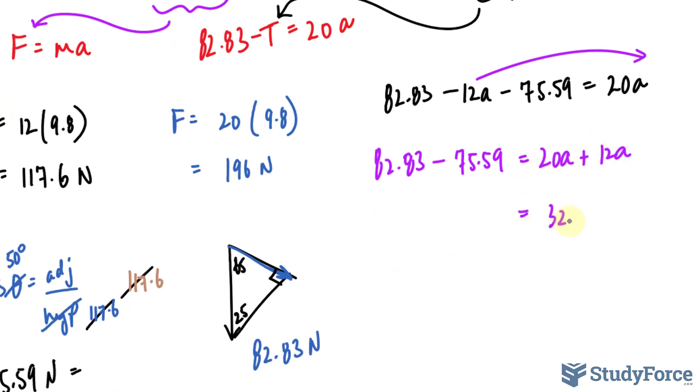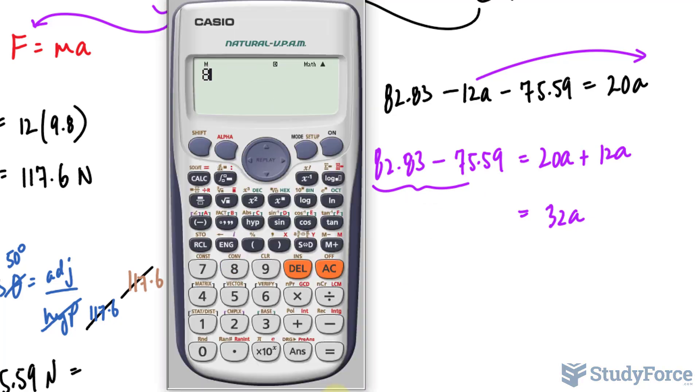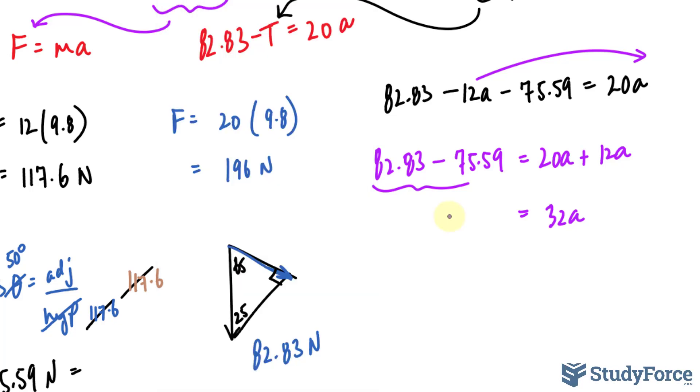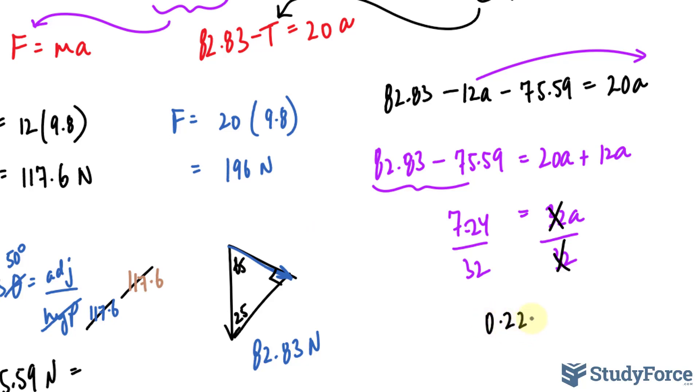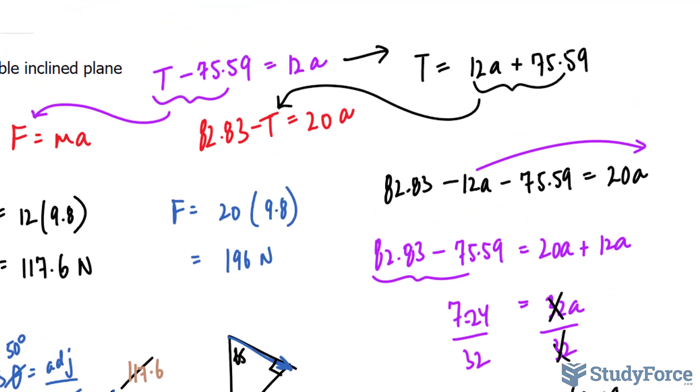And subtracting these two, 82.83 minus 75.59 gives us this value, 7.24. And dividing both sides by 32 now, the 32s cancel out. 7.24 divided by 32 makes 0.226 meters per second squared as the acceleration. That is the acceleration of the system.